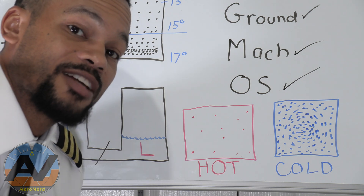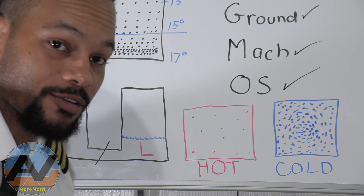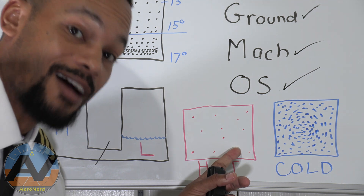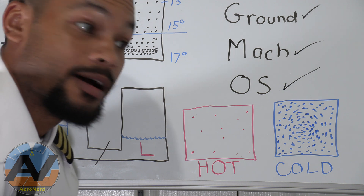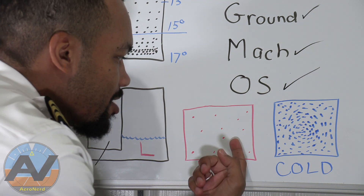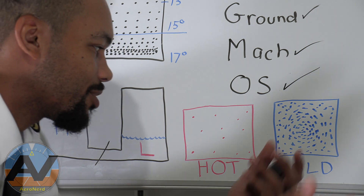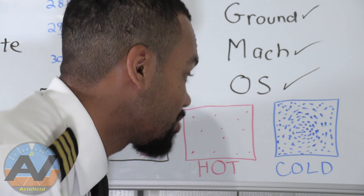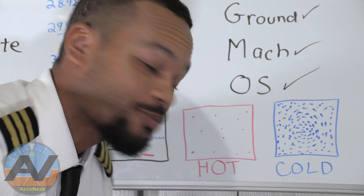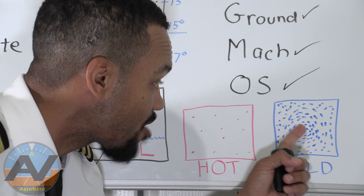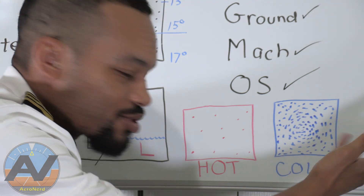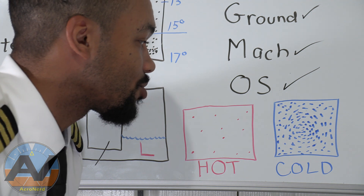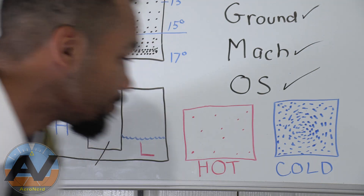On a hot day, you can expect your pressure altitude to be really high and your aircraft performance to be really poor — because wings need a lot of air molecules in order to fly. On a cold day with a high pressure system, you've got a higher number of air molecules per square inch, so your wing performance is going to be a lot better. That's literally how the molecules work: hot versus cold.